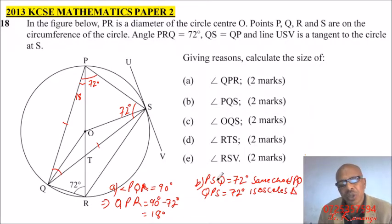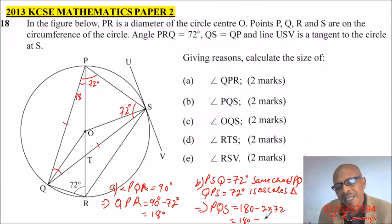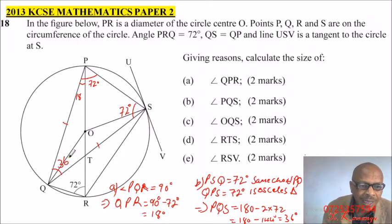This is an isosceles triangle. This implies that since PQS is a triangle, then PQS is equals to 180 minus 2 multiplied by 72. This should give you 180 minus 144, which will give you 36 degrees. So it means this angle here is 36 degrees. So that is, you have given reasons.